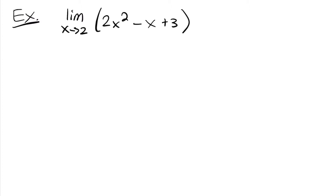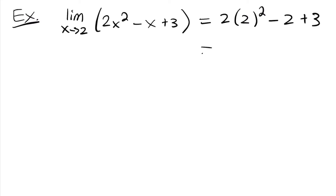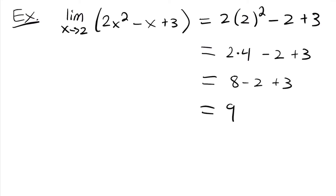Let's start with this first one here. We have the limit as x approaches 2 of 2x squared minus x plus 3. This is just your simple plug-in because all we have to do is plug in and we'll get a nice answer. We have 2 times 2 squared minus 2 plus 3, which equals 2 times 4 minus 2 plus 3, giving us 8 minus 2 plus 3, which is 6 plus 3, equaling 9.